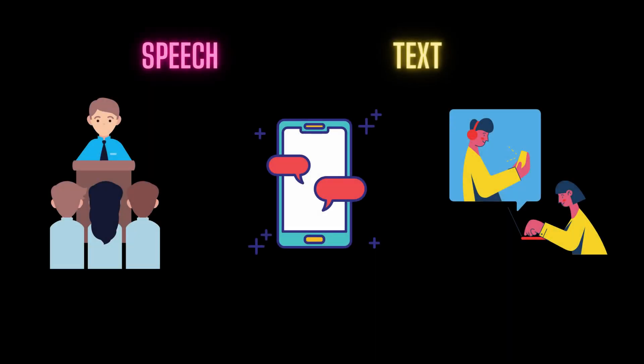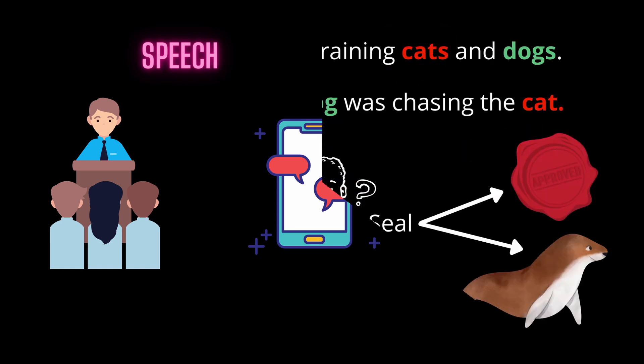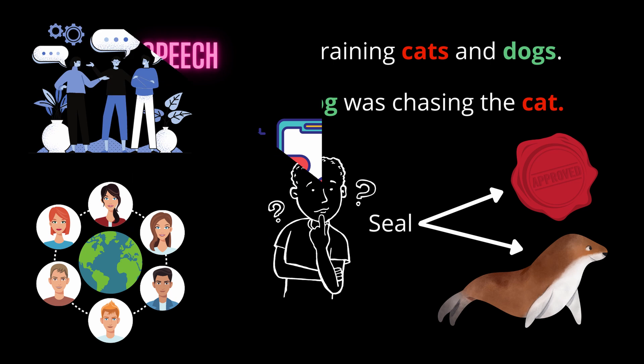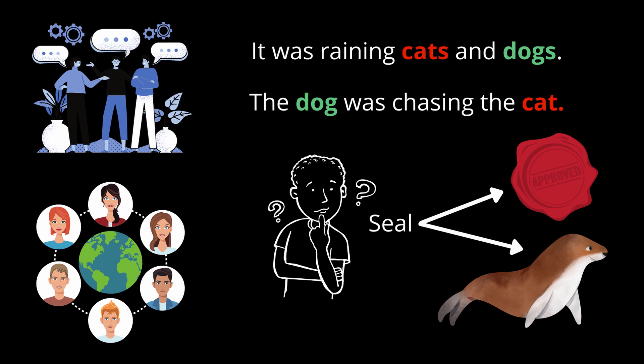Natural language refers to the way humans communicate with one another by means of text and speech. You might be thinking: why is natural language difficult to be processed by machines? This is because in natural language there are large, diverse vocabularies, words with several different meanings, and speakers with different accents and nuances. Also, a computer's native language — machine language — is basically zeros and ones, which produce logical actions.